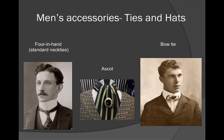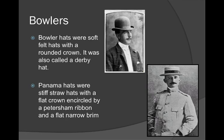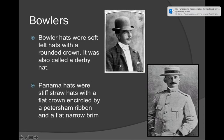Men also had other accessories during this time. They had the four-in-hand, which is a standard necktie, as well as ascots and bow ties, so men were accessorizing just as much as women. They also had different types of hats: the bowler hat, a soft felt hat with a rounded crown also called a derby, and the Panama hat, a stiff straw hat with a flat crown encircled by a ribbon on a flat narrow brim.